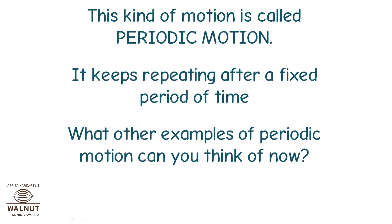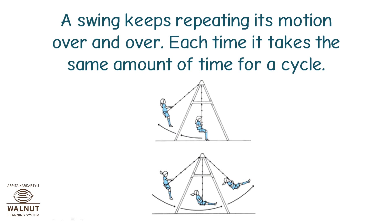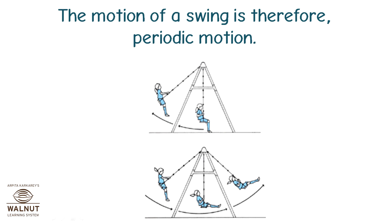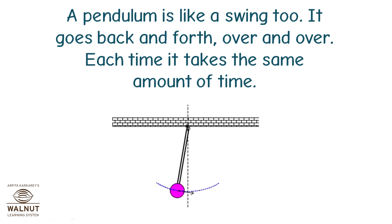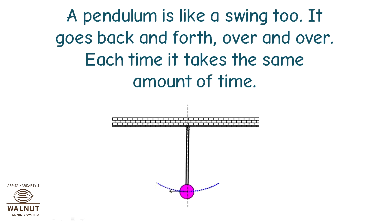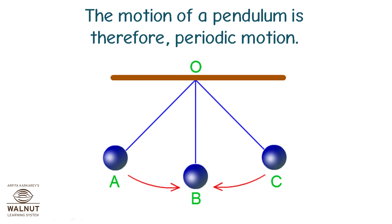This kind of motion is called periodic motion — it keeps repeating after a fixed period of time. A swing keeps repeating its motion over and over; each time it takes the same amount of time for a cycle, so the motion of a swing is periodic motion. A pendulum is like a swing too — it goes back and forth over and over, each time taking the same amount of time. The motion of a pendulum is therefore periodic motion.